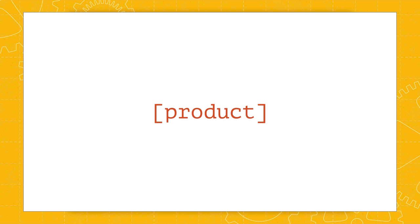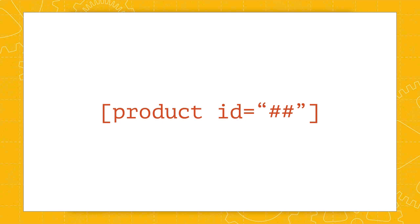With that in mind, we're going to start with probably the simplest WooCommerce shortcode — the product shortcode. The product shortcode will display product information on any post or page. Now, how does WordPress know which product to display? This is where shortcode arguments come in. In practice, the shortcode will have some additional information included — in this case, the argument is ID.